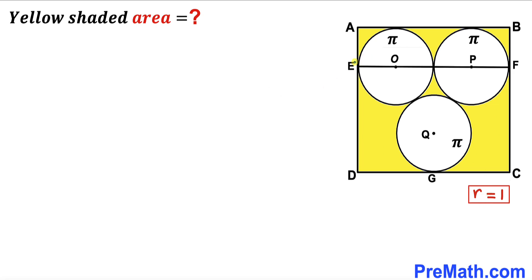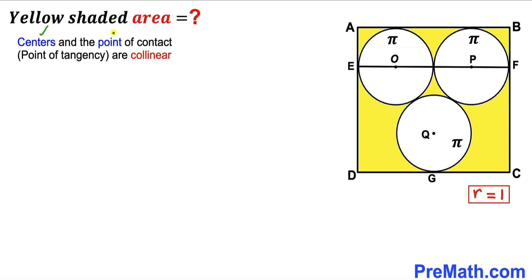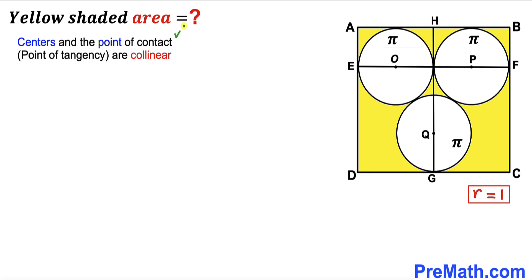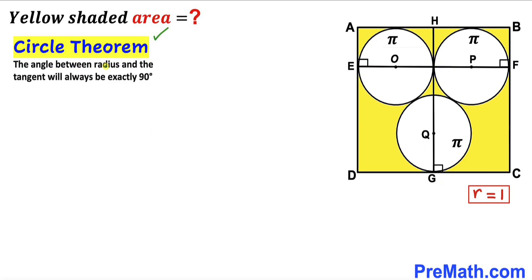In the next step, I have connected the points of tangency E and F. Recalling the crucial fact: centers and points of tangency are collinear. So points E, center O, center P, and point F all lie on the same line. Connecting point G with point H, the same principle applies. By the circle theorem, the angle between the radius and the tangent is always 90 degrees, so all these angles are 90 degrees.